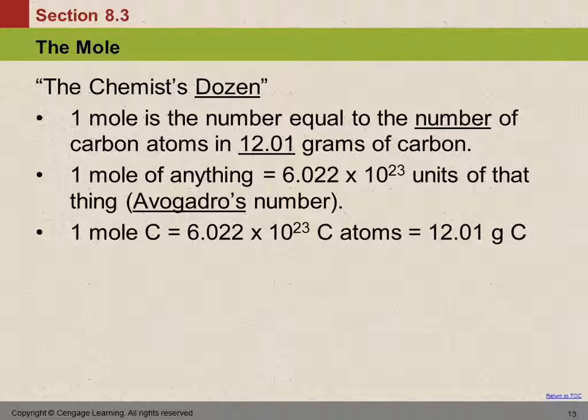Is that a big number or a small number? That's a crazy big number. That's a 6 with 23 zeros after it. Crazy big number.